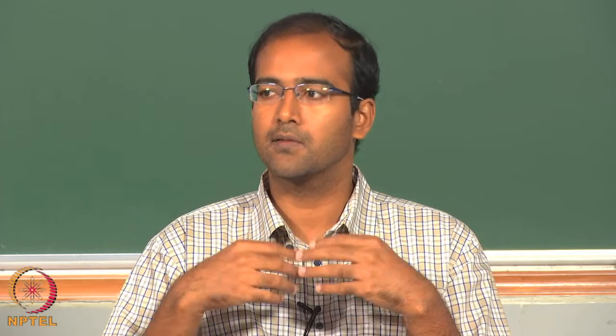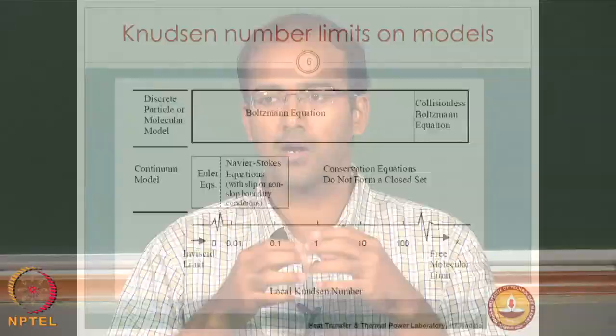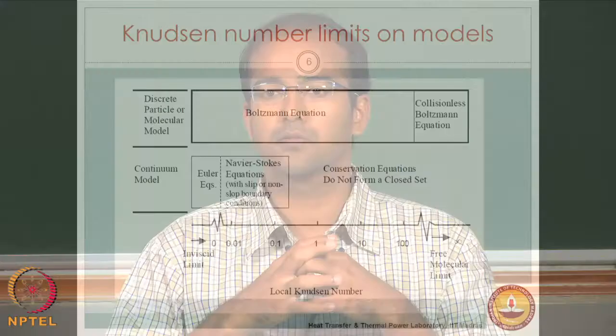A very high Knudsen number indicates complete deviation from equilibrium continuum theories — everything is non-equilibrium with local non-equilibrium existing. A Knudsen number approaching infinity means the free molecular limit, where molecules hardly see each other and only interact with domain boundaries. A very small Knudsen number, on the other hand, corresponds to the conventional continuum-based approximation, where statistically large numbers of molecules allow description of properties like pressure and temperature.